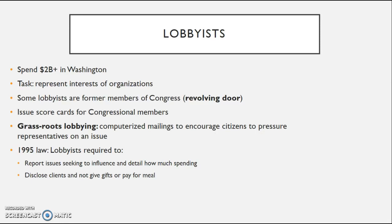There hasn't been too much legislation on what lobbyists are not allowed to do, but to an extent they have to report their issues, disclose how much they're spending, and disclose their clients. They are not allowed to give gifts or payment for a meal. However, interest groups are allowed to donate towards campaigns, leading some people to believe this is basically legalized bribery.